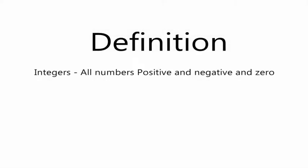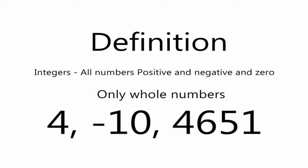First, let's talk about the definition. An integer is described as the set of all numbers, positive or negative, as well as zero. Integers include only whole numbers, so no decimals, as you can see 4, negative 10, even 4,000, 651.